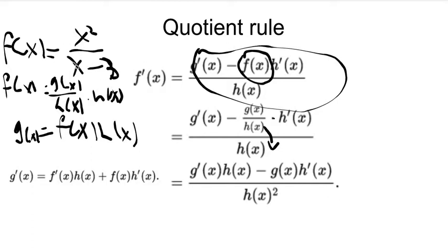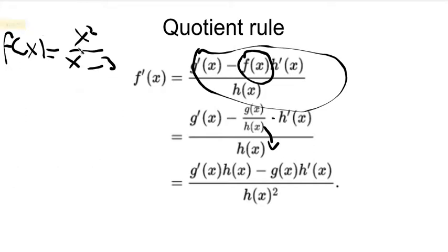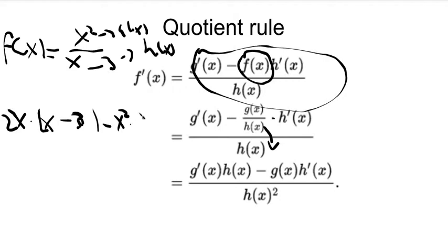Now let's solve this f of x thing. So, we know that if the top part is g of x, and the bottom part is h of x, we could just follow these rules. So g prime of x would be 2x multiplied by h of x, which is x minus 3, minus g of x, which is x squared, multiplied by 1,